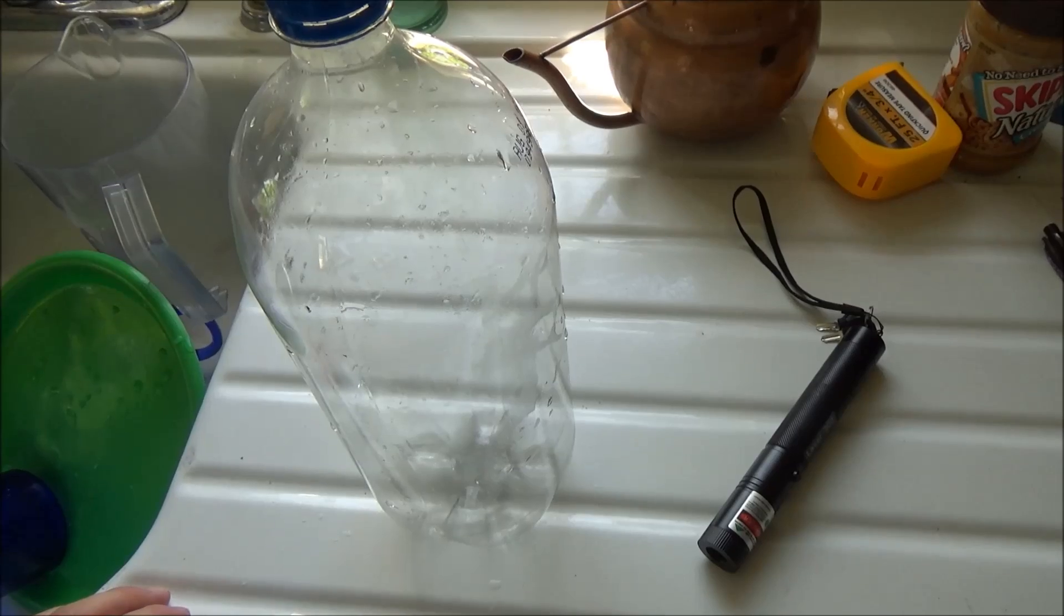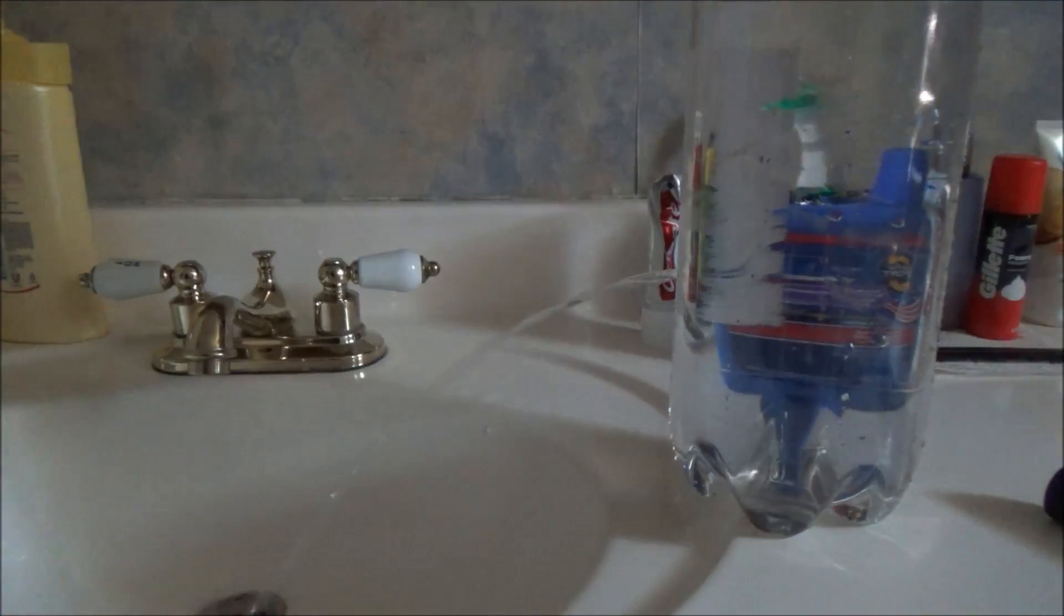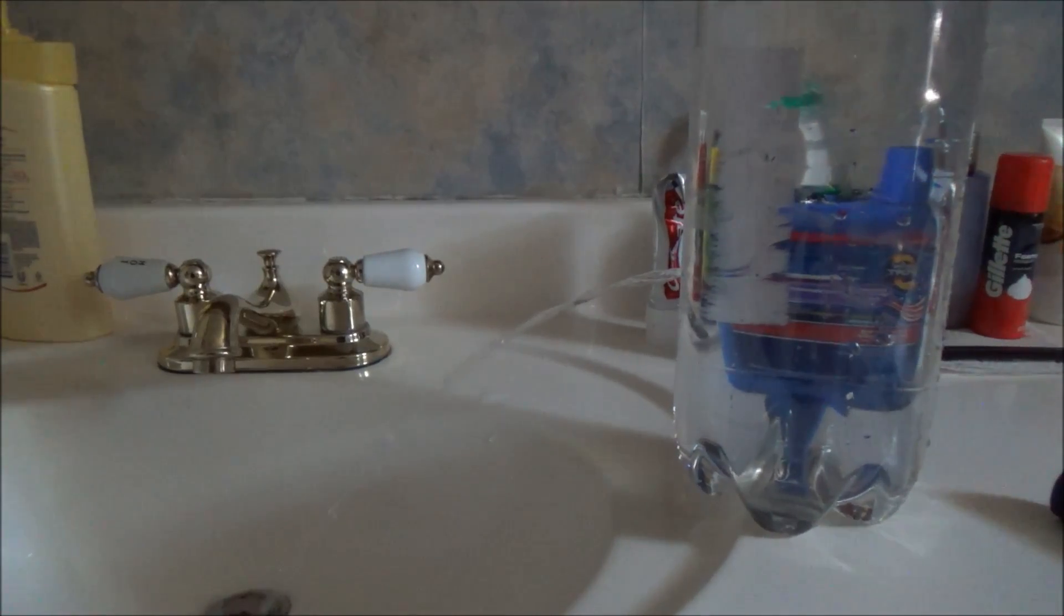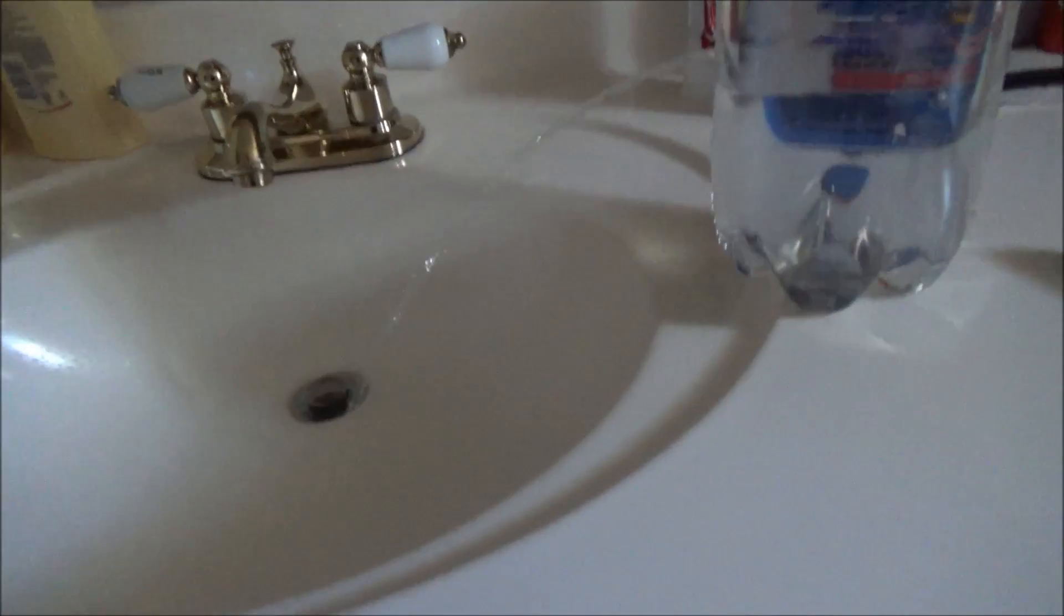Once you have that hole cut approximately the same size as the one I cut right there, you're either going to cover up that hole with your finger or a piece of tape. You're going to fill up that bottle full of water and you're going to leave the cap off and position it next to a sink like you see mine positioned right here.